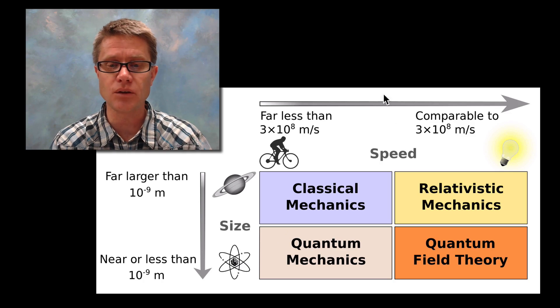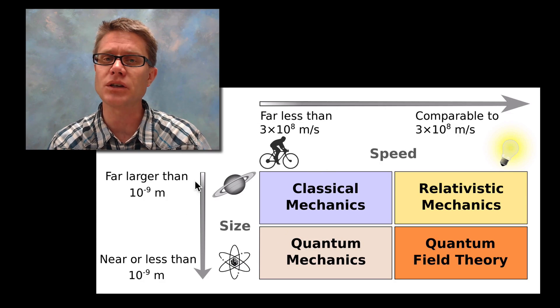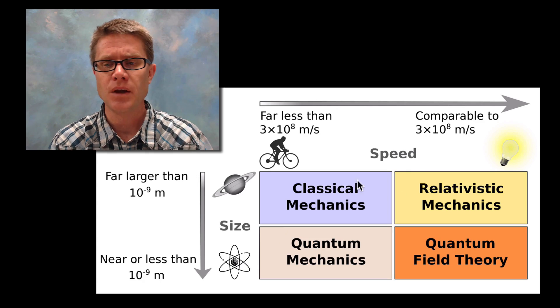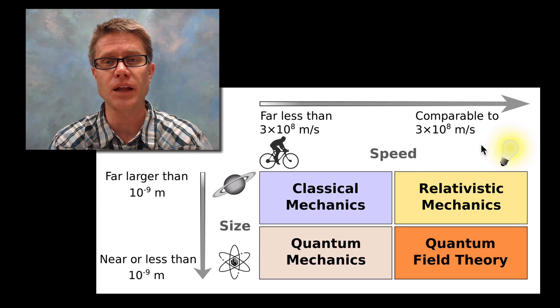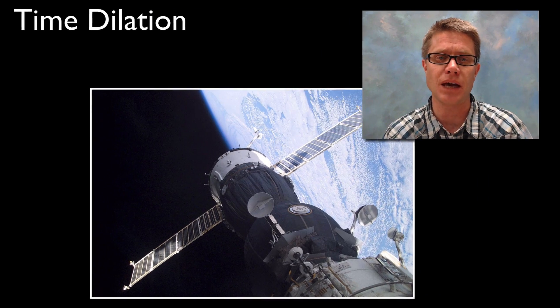We live in the world of classical mechanics, a world that is much slower than the speed of light and much larger than atoms. But as we start to approach the speed of light and as gravity gets very large, we start to move into relativistic mechanics.